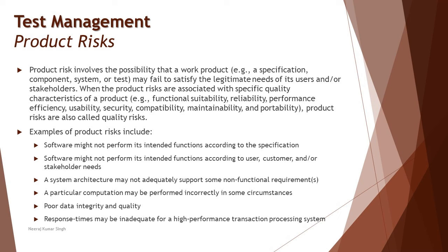Talking about computation algorithms — where computation involves converting one unit to another, like converting currencies from one to another — that could also be an example which leads to product failure. Poor data integrity is another risk, where you look forward to integrating different applications together. For example, Amazon integrated with many payment gateways — MasterCard, Visa, Amex, Diners, net banking, etc. If those integrations are not appropriate, you may not be able to pay through those gateways and may stop using the platform because of that.